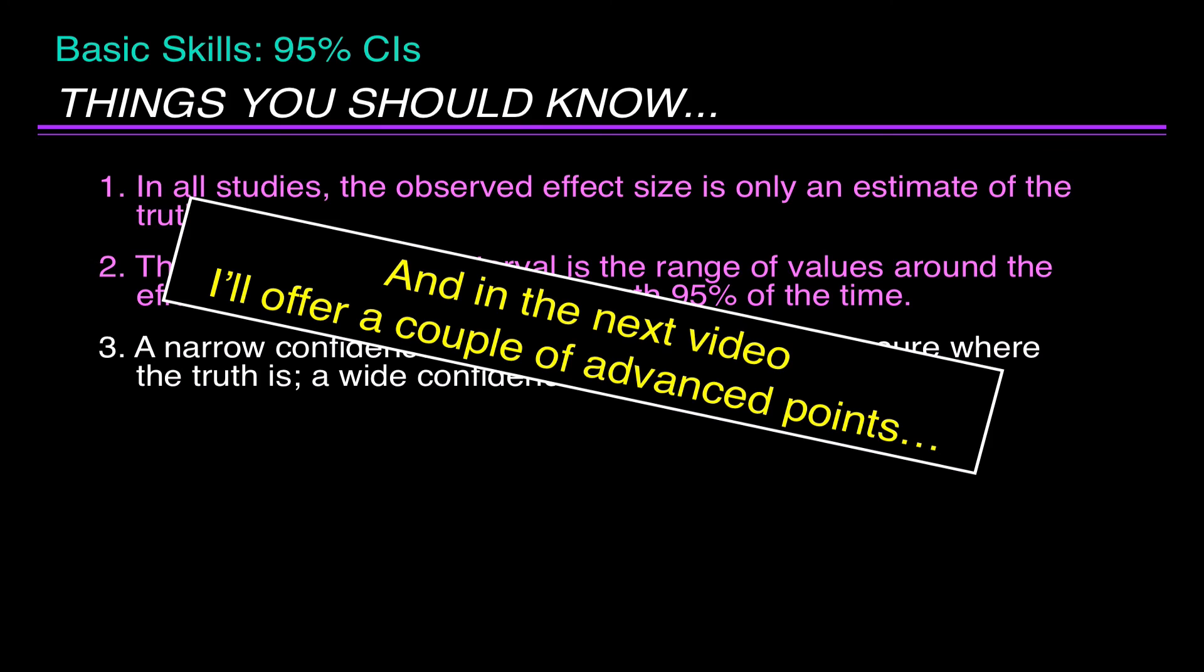Now, in the next video, I'll offer a couple of advanced points about confidence intervals, because there's a lot of information in them. But before we end, I just want to talk about the relationship between 95% confidence intervals and p-values. If the p-value is greater than 5%, then the 95% confidence interval should include no difference between the two groups.